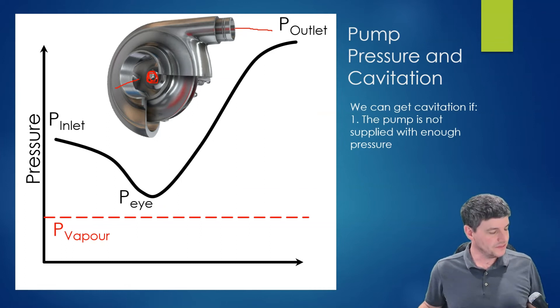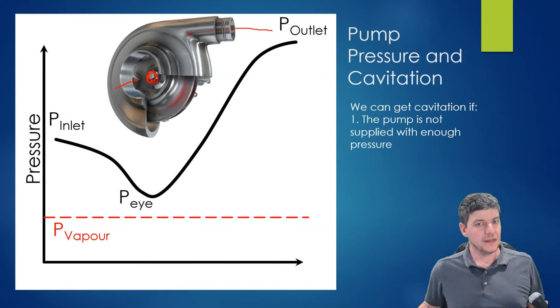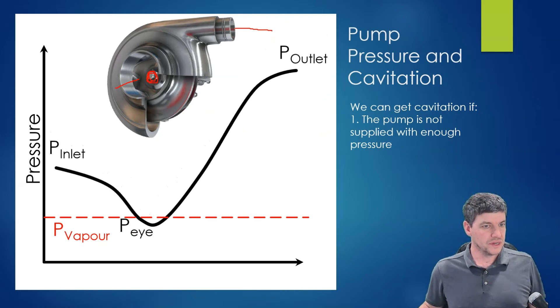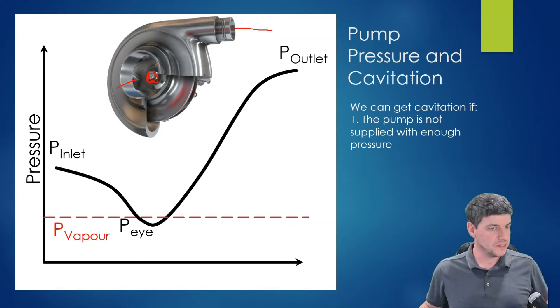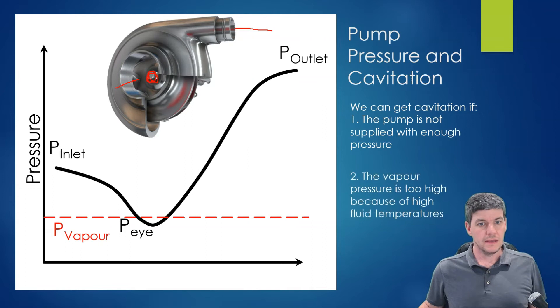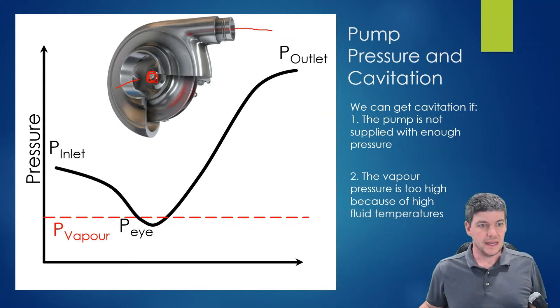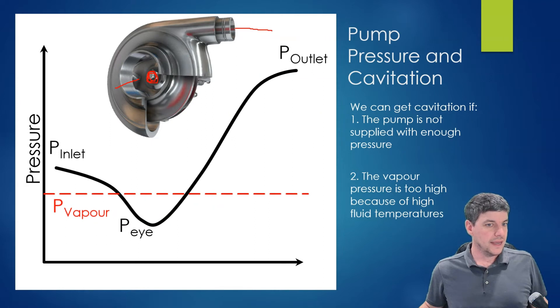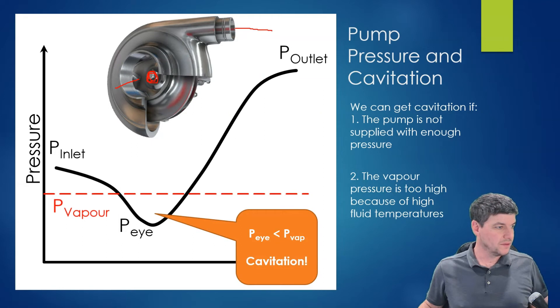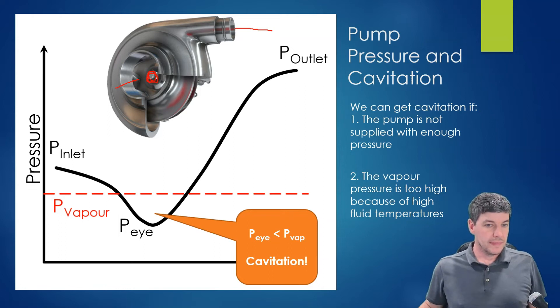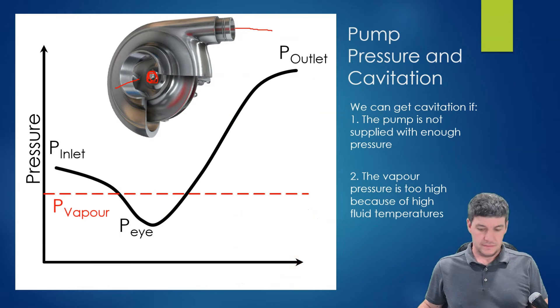Cavitation can occur in a few different cases. First, if we don't supply the pump with enough starting pressure, the entire pressure curve shifts down and the eye dips below the vapor pressure. Second, if the fluid temperature is higher than expected, the vapor pressure rises, and again a section of the pressure curve may drop below the vapor pressure, causing cavitation.